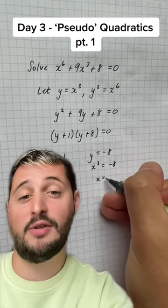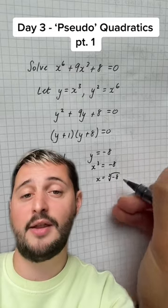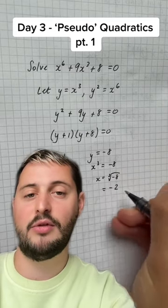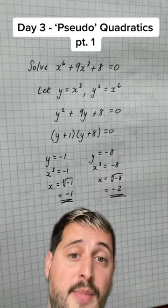Do the same for minus 8. x cubed is minus 8, so x is the cube root of minus 8, meaning that x must be equal to minus 2. Our two solutions are minus 1 and minus 2.